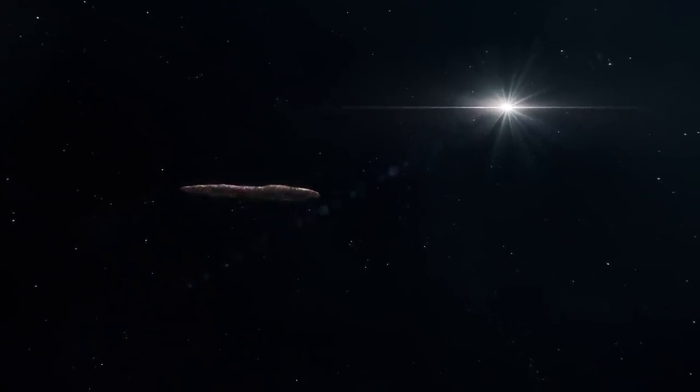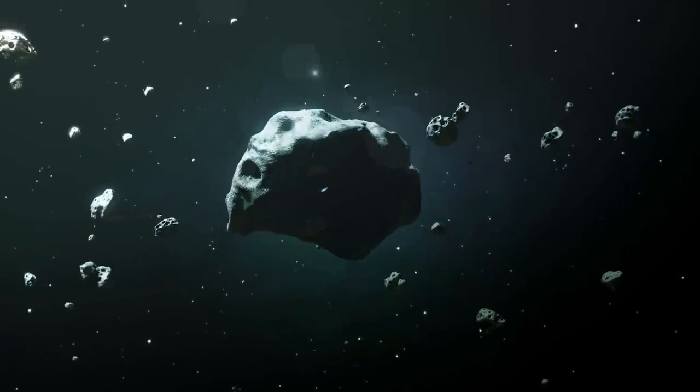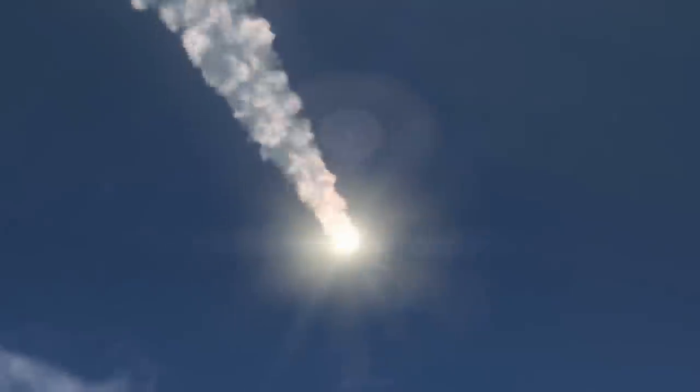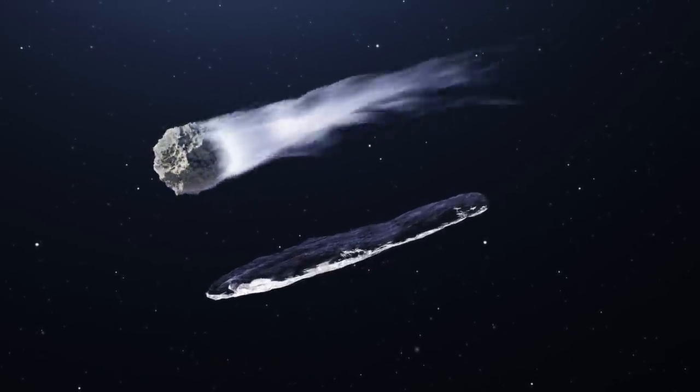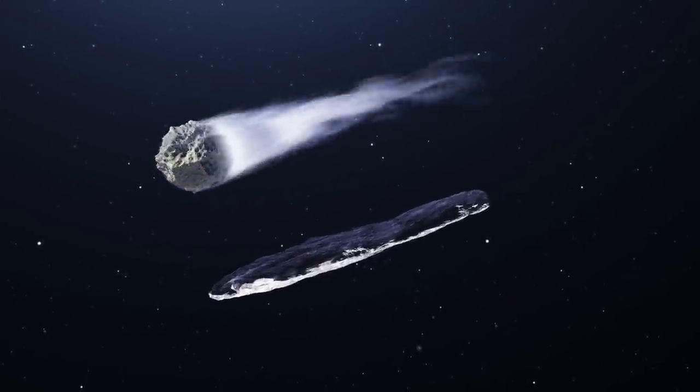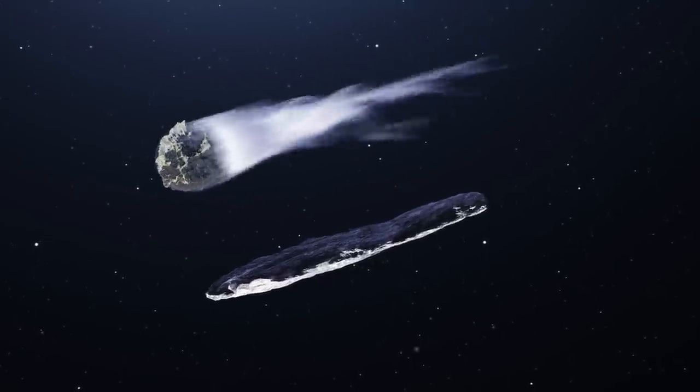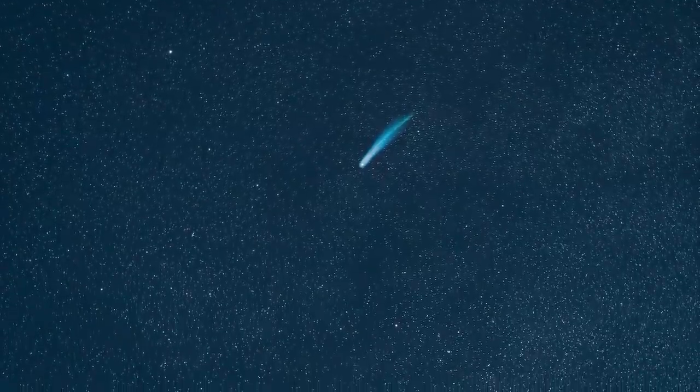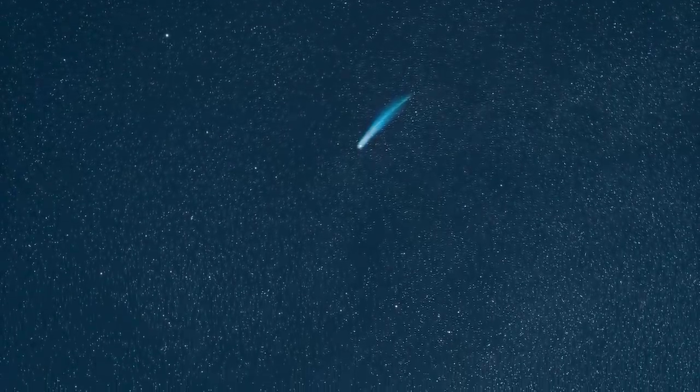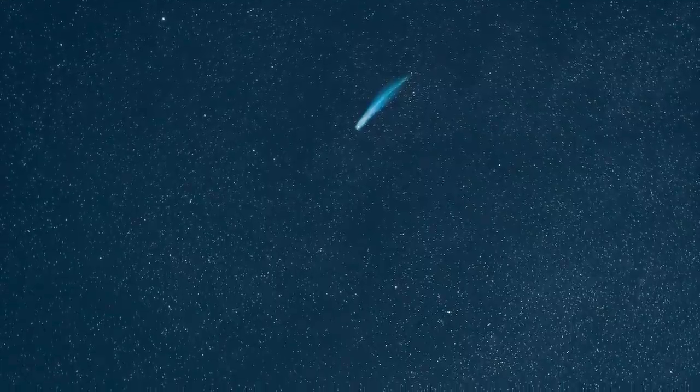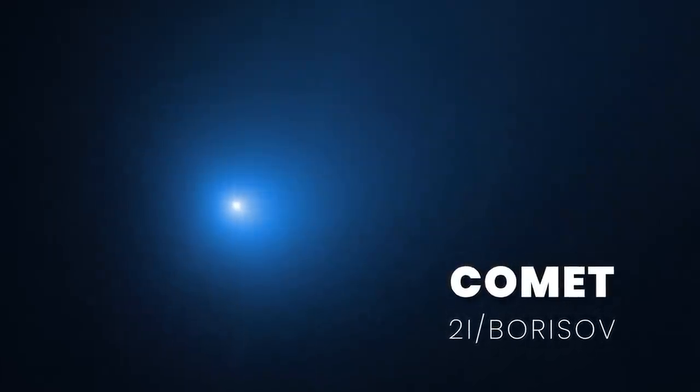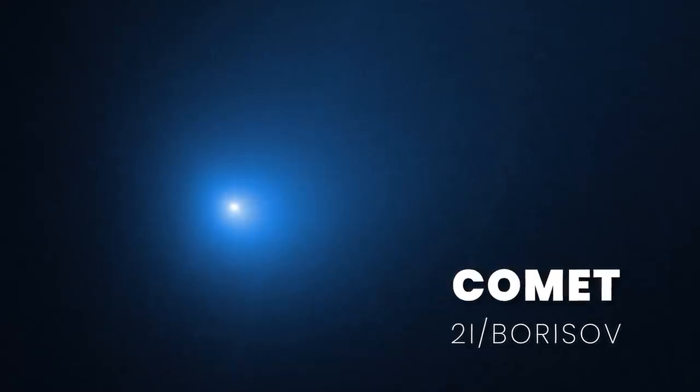The strange thing about Oumuamua is it's not an asteroid, and it doesn't look anything like your ordinary comet. However, it behaves like a comet. Comets are small icy bodies that develop tails made of volatile materials vaporizing off from the heat of the sun. The second interstellar object discovered in 2019, comet 2I Borisov, behaved like a normal comet, and this made Oumuamua look even stranger.